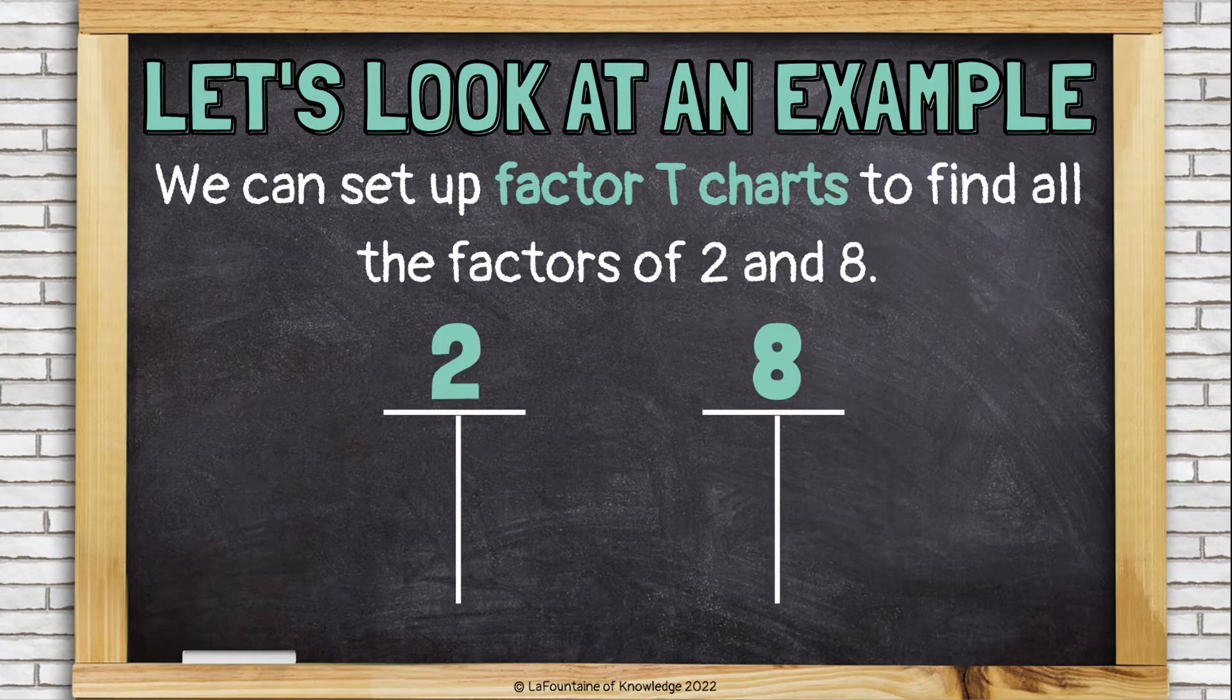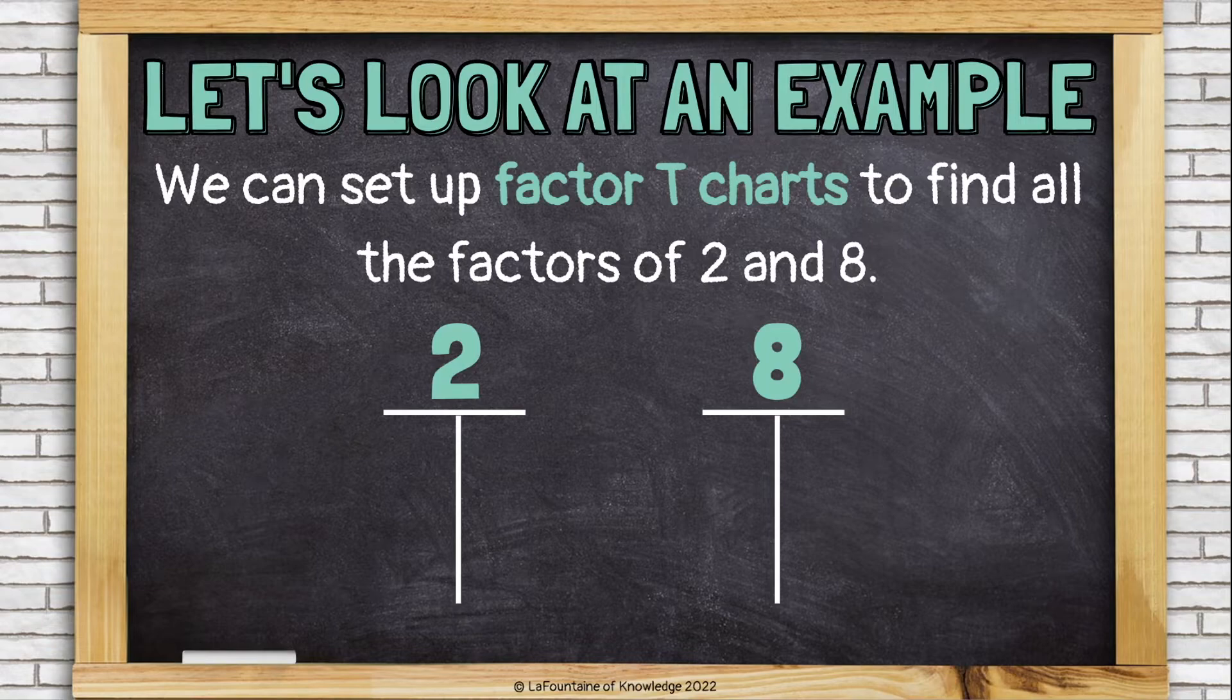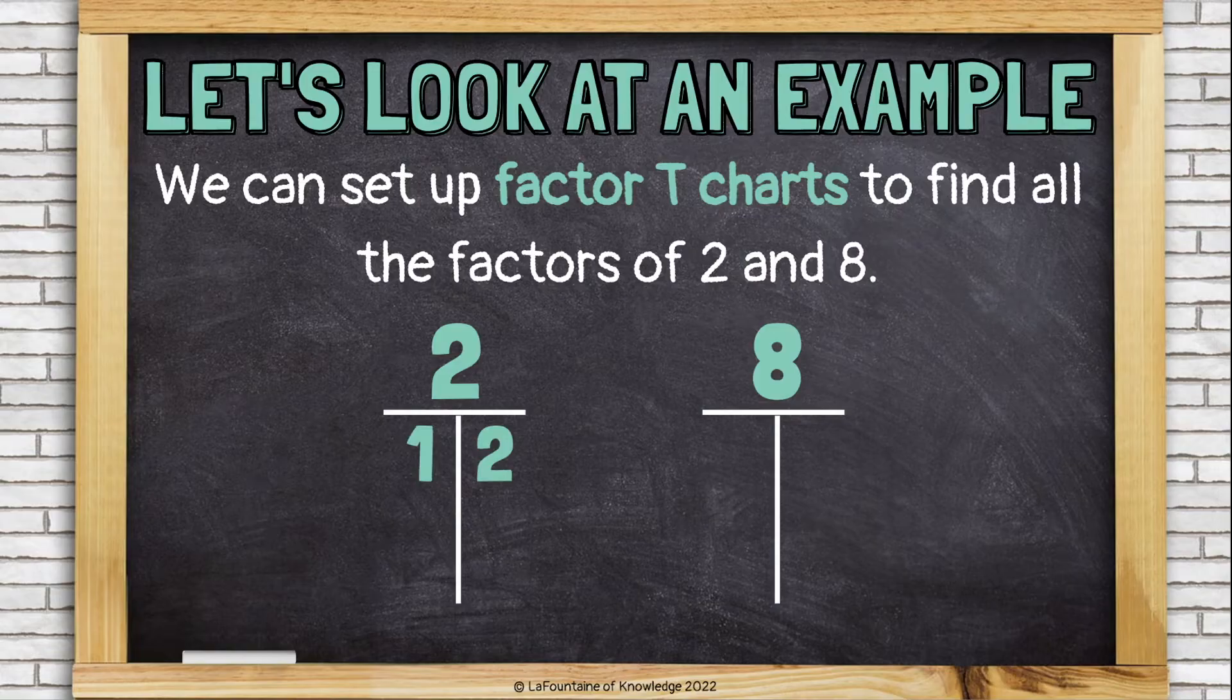So, when I'm using a factor T chart, I always start at one. And one is a factor of every number. So, for two, I'm going to have one and two. One times two is two. And that's it for two. Two is a prime number. It only has one factor pair.